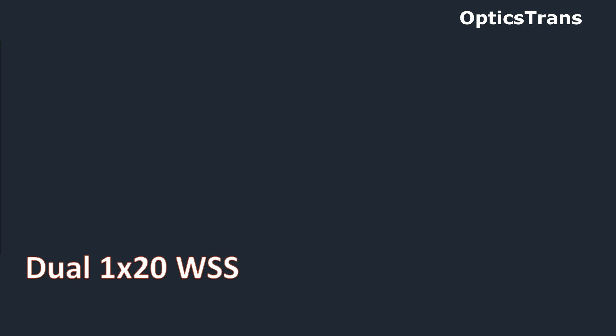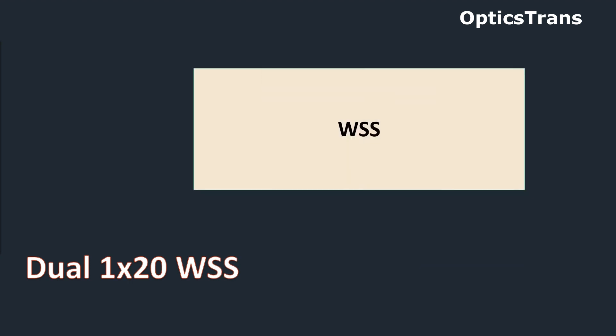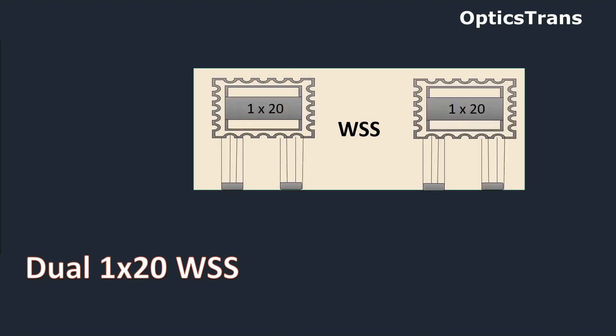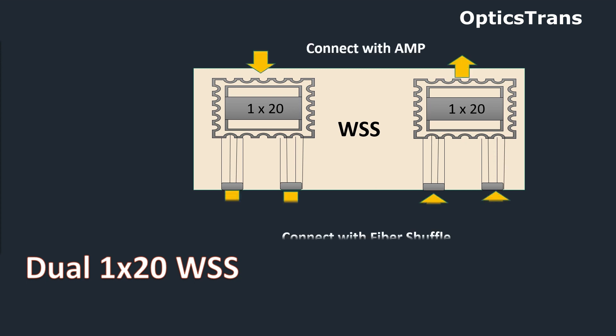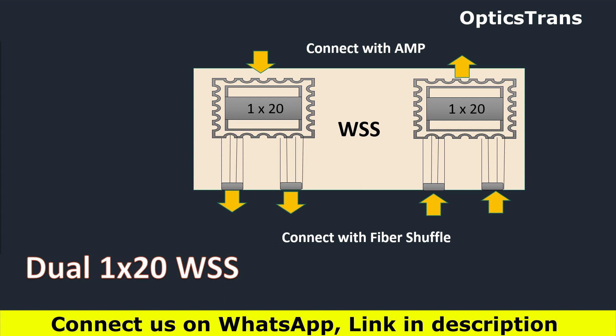First is the dual 1x20 WSS. This card has dual WSS; all other functionalities are the same as other configuration ROADM WSS. Here, one WSS is used to add and one is used to drop the traffic. For dropping the signal, one WSS receives the signal from the amplifier and sends it to the WSS output port, which connects with the fiber shuffle.